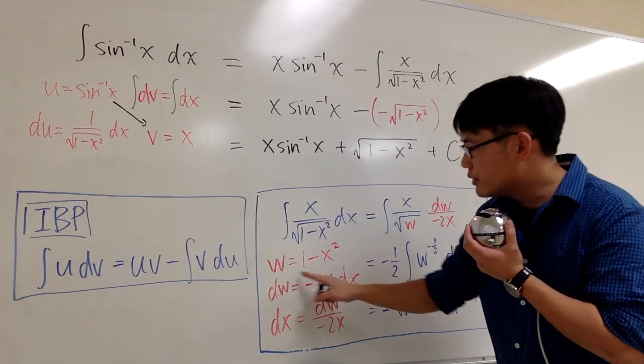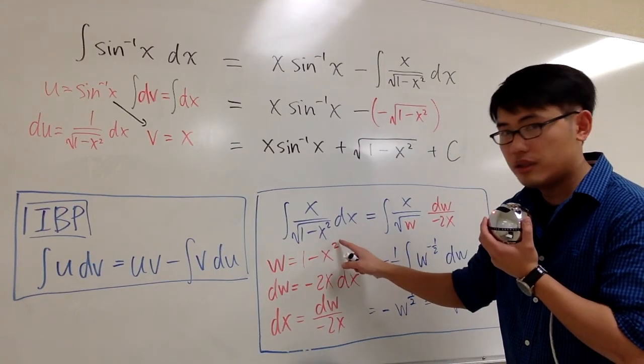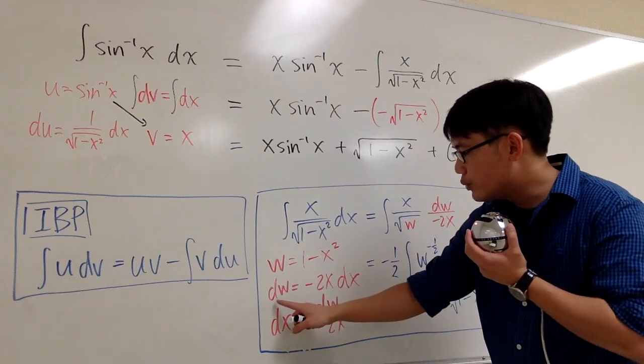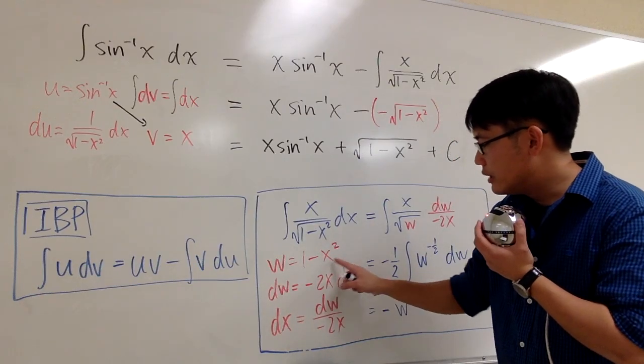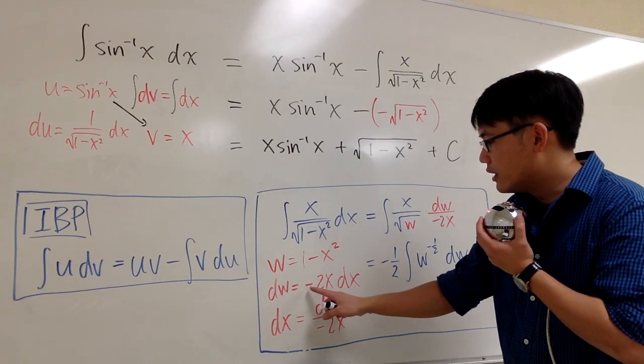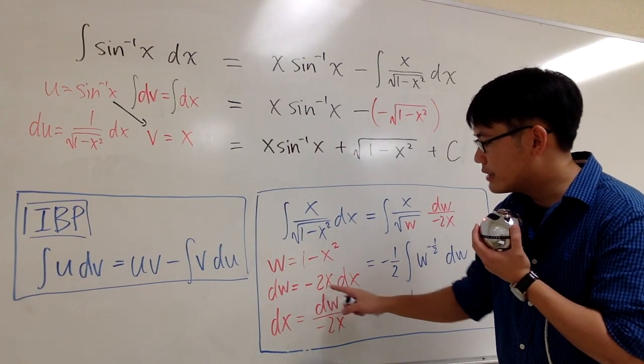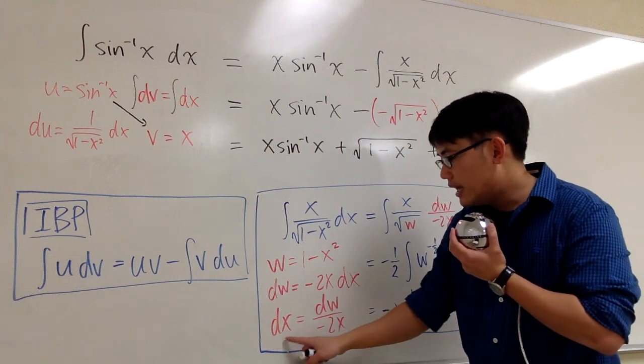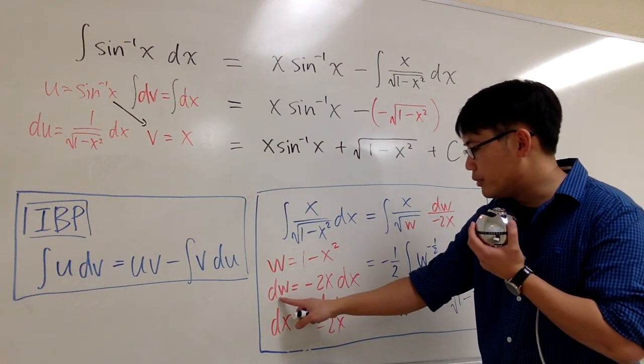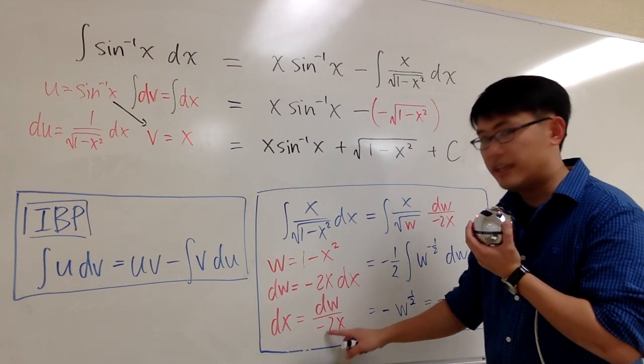Let w equals 1 minus x squared. So the inside function. And differentiate both sides. We get dw equals the derivative of this is just negative 2x dx. I have to isolate the dx. So divide negative 2x on both sides. I get dx equals dw over negative 2x.